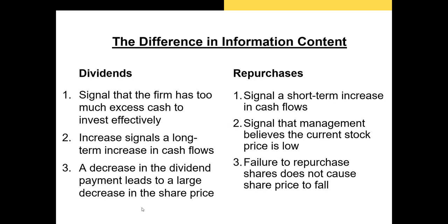A decrease in the dividend payment leads to a large decrease in the share price — historically, the average return around a dividend cut announcement has been found to be about negative 7%. It's a massive negative signal to shareholders about the future performance of the firm. Whereas with a repurchase, failure to repurchase shares doesn't cause the share price to fall. Investors are never really expecting a repurchase announcement. Instituting a repurchase policy instead of regular dividends gives the firm far more flexibility in determining when and how it pays out cash to shareholders.